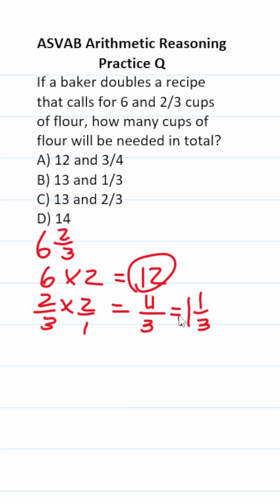Add these two together. Twelve plus one and one-third is thirteen and one-third. So the answer to this one is B. That's one way to solve it.